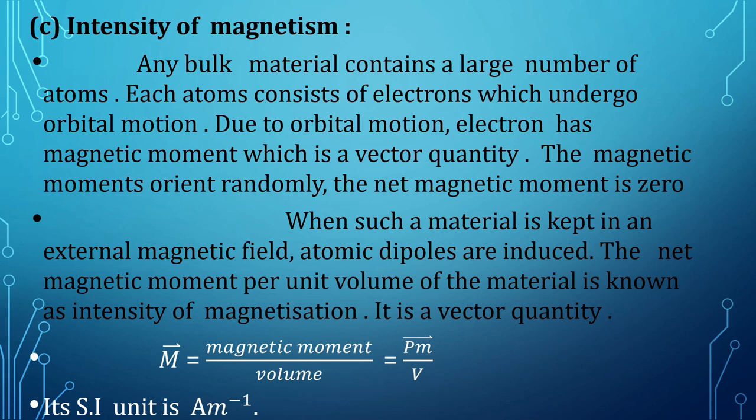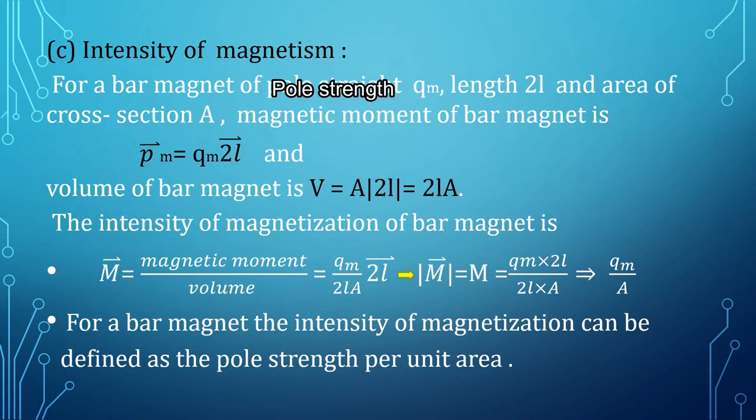When such a material is placed in an external magnetic field, the atomic dipoles align and induce a net magnetic moment. The net magnetic moment per unit volume of the material is known as intensity of magnetization. It is a vector quantity: M vector equals magnetic moment divided by volume, equal to pm vector divided by V, with unit ampere per meter.